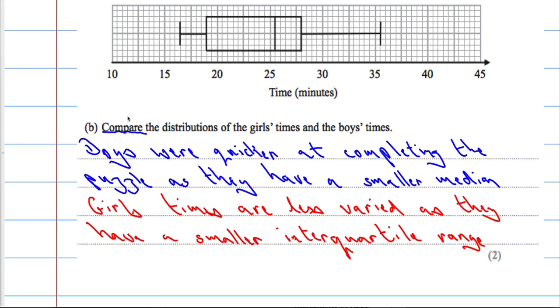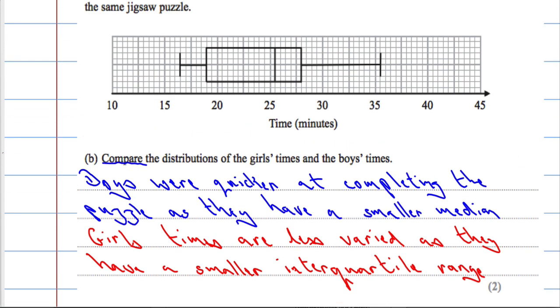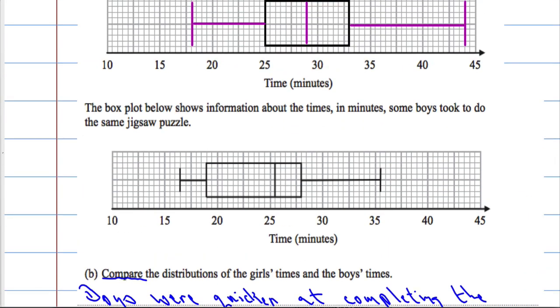So remember, when we're comparing distributions, you need to comment on an average and you need to comment on a measure of spread. So either the range or the interquartile range. Interquartile range is better. It's a better measure than using the range.